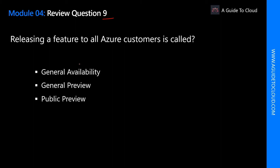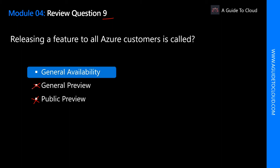Releasing a feature to all Azure customers is called what? Public Preview is a preview feature available for everyone to test — it's not a full release. There is nothing called 'General Preview' in Azure. The correct answer is General Availability (GA) — General Availability is a feature released to all Azure customers.